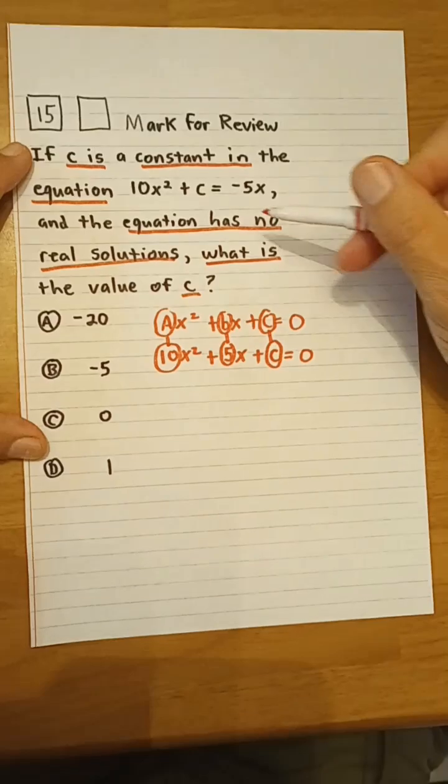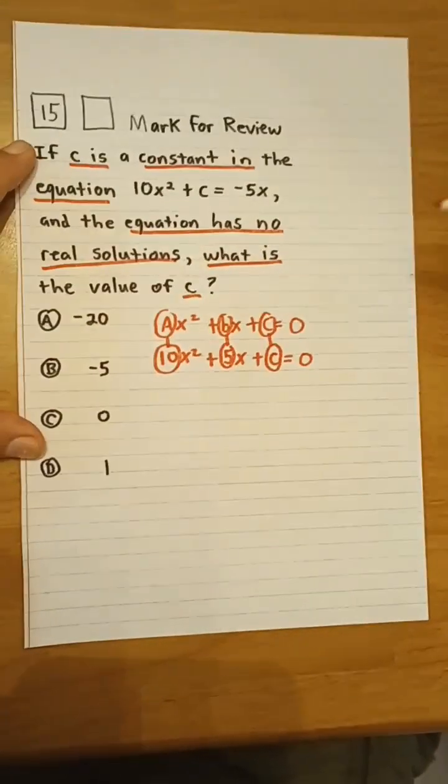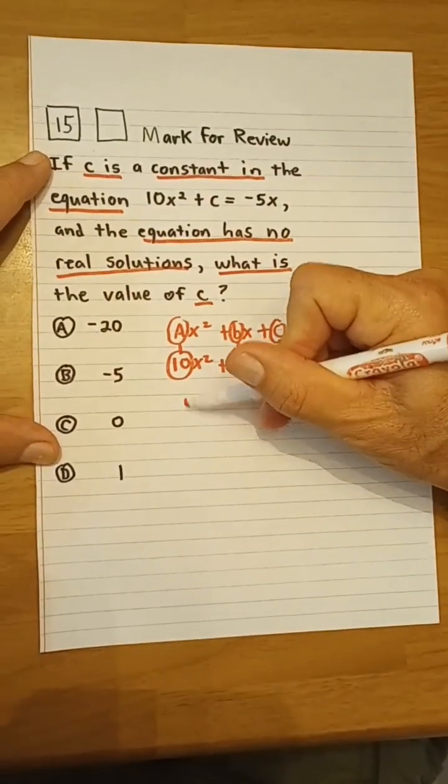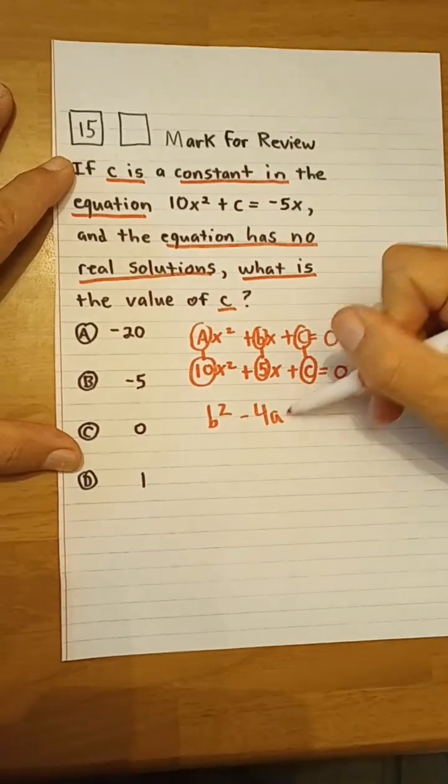We need to remember that when there is no real solutions, it means the discriminant is negative. The discriminant is equal to b squared minus 4ac.